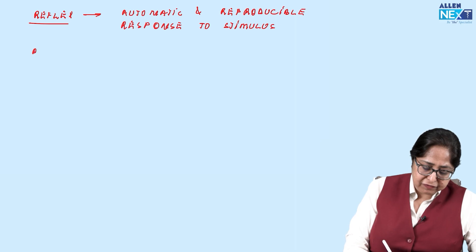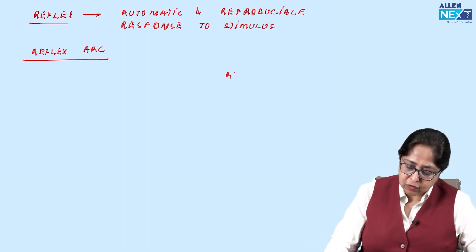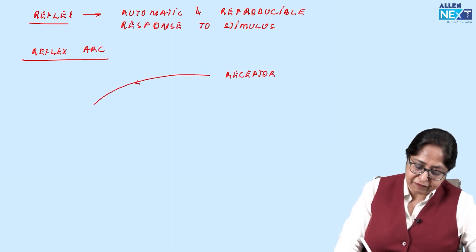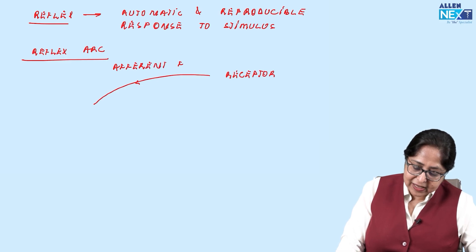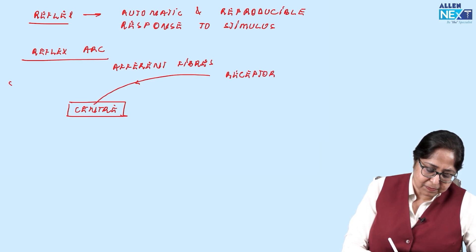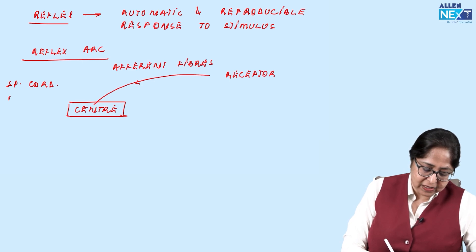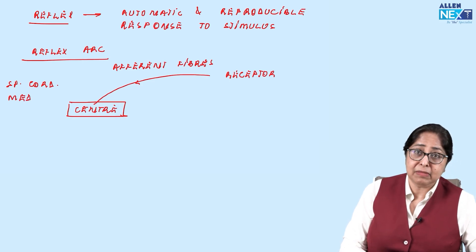What is a reflex arc? A reflex arc consists of a receptor. From the receptor, afferent fibers carry the impulses to a center. The center could be anything — if it is the spinal cord, it is known as a spinal reflex; if it is the medulla, it is known as a medullary reflex.